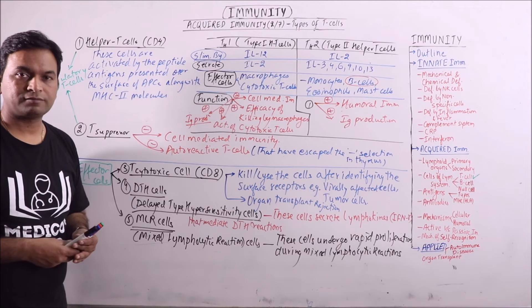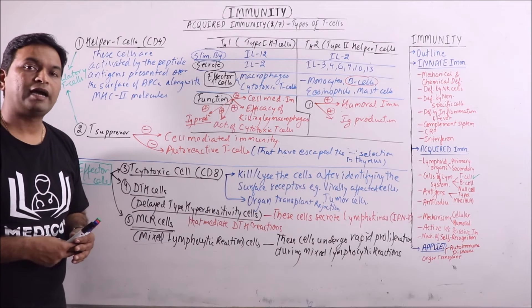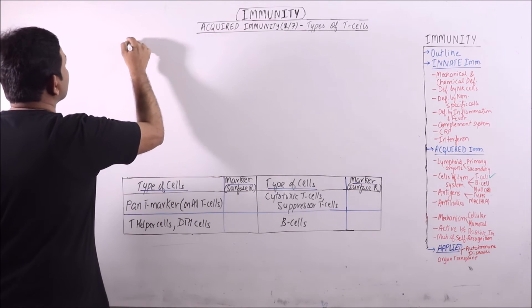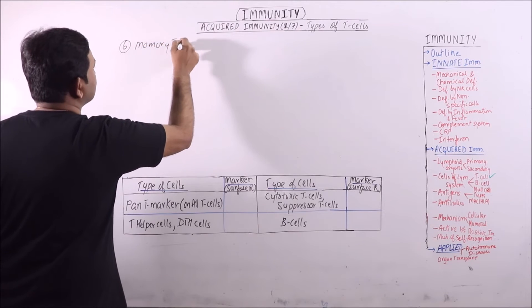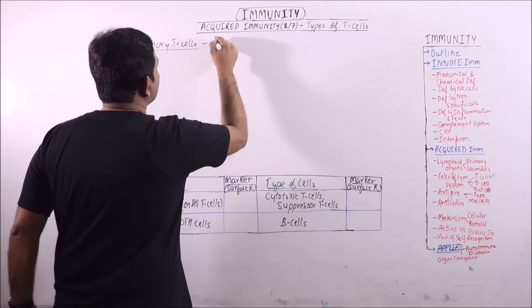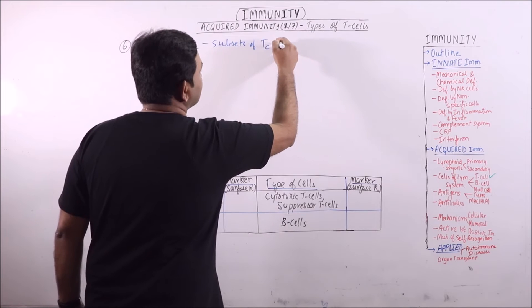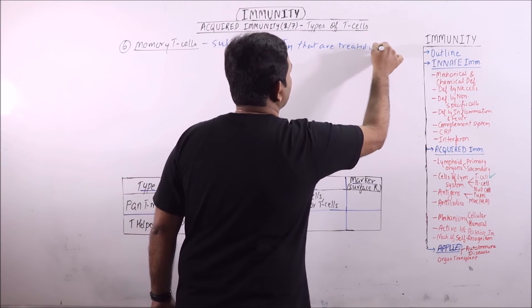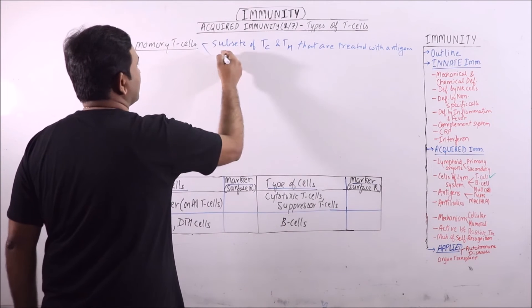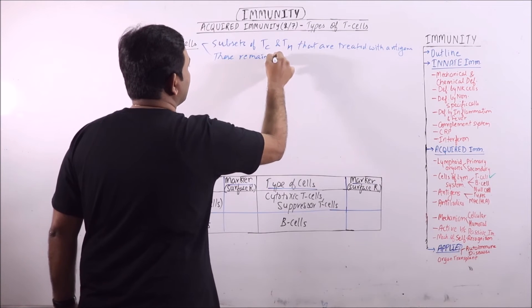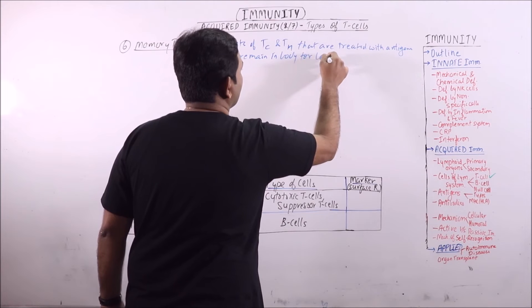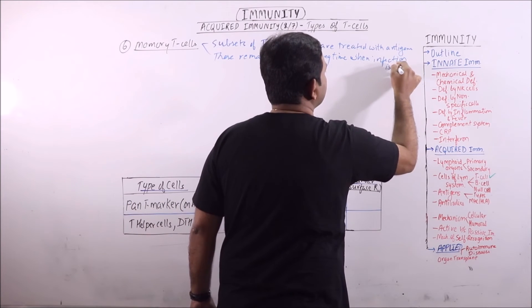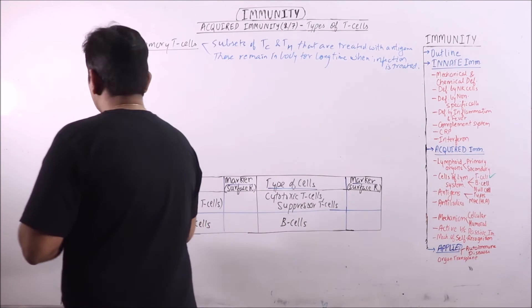We will discuss some other types of T-cells: natural killer T-cells, memory cells, and the gamma delta type of T-cells. These are memory T-cells. Memory T-cells are subsets of cytotoxic T-cells and helper T-cells that are treated with antigens. These remain in body for long time when infection is treated.